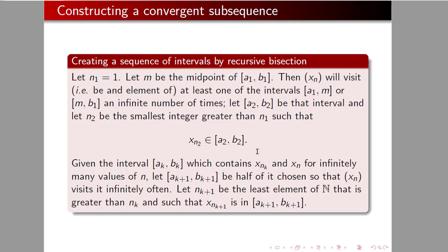So what we're going to do is now process this down the line. Say we have an interval that contains infinitely many values of our sequence. Cut it in half and choose the half that the sequence visits infinitely often. Then, take n sub k plus 1 to be the least element of the natural numbers that's greater than n sub k, such that x sub n sub k plus 1 is in that interval. And so, we can go on doing this forever, each time getting an interval that's half as big as it was before.